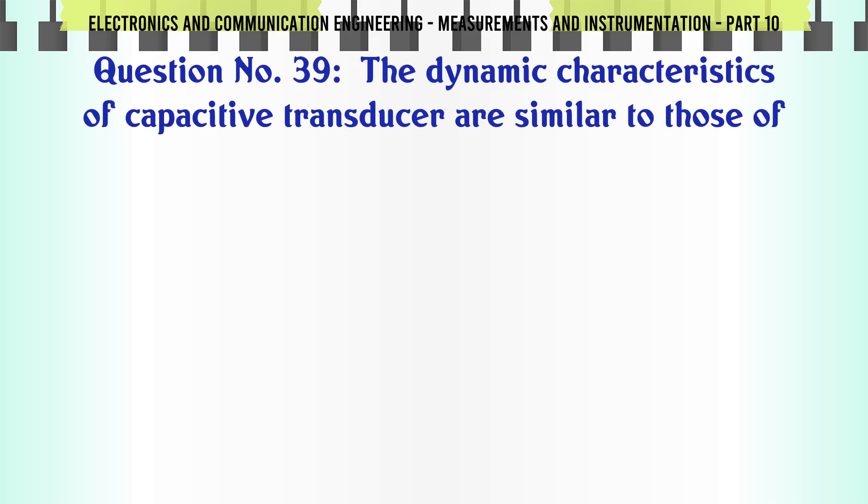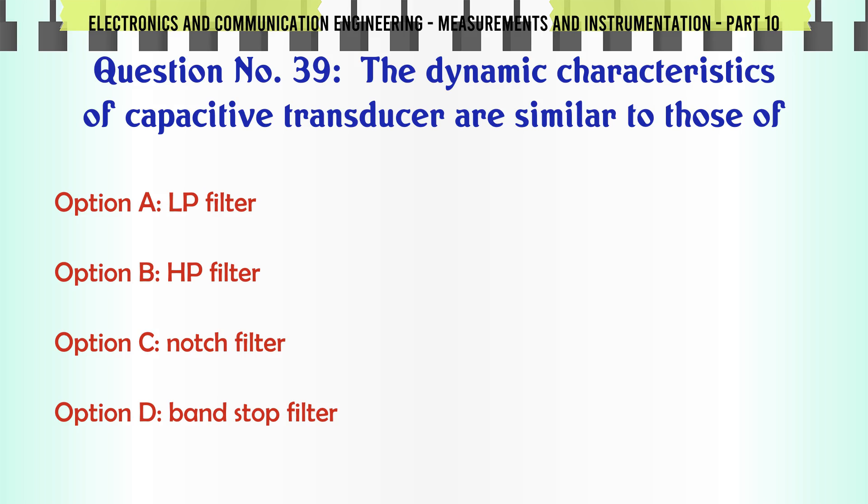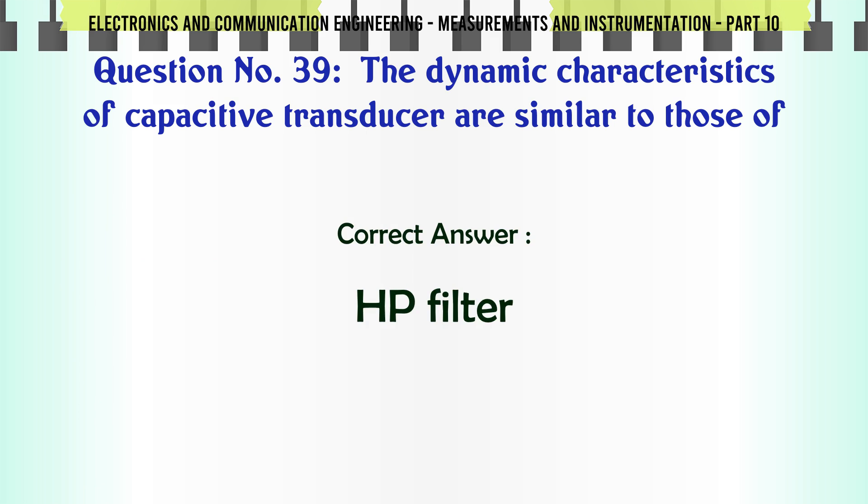The dynamic characteristics of capacitive transducer are similar to those of: A) LP filter, B) HP filter, C) notch filter, D) band stop filter. The correct answer is HP filter.